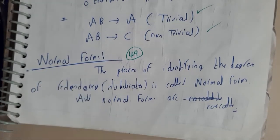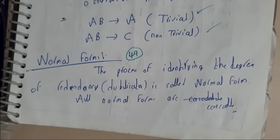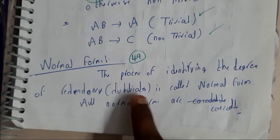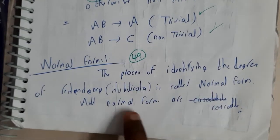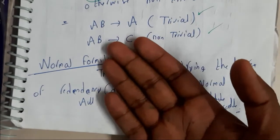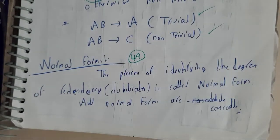So what is the main use of normal form? The process of identifying the degree of redundancy or duplication is called as normal form. All normal forms are cascadable, so cascadable means one depends on another. That process continues.